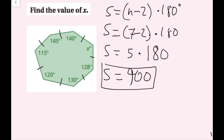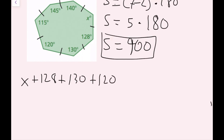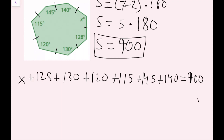Now I know what to set the sum of the angles equal to. Writing the equation, starting with x and going clockwise: x plus 128 plus 130 plus 120 plus 115 plus 145 plus 140 equals 900. To solve this equation, I combine all of the constant terms and then subtract that number from both sides to find x.